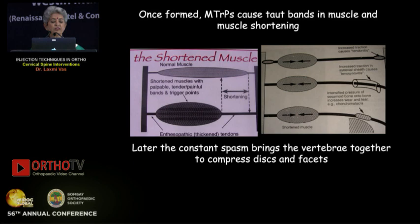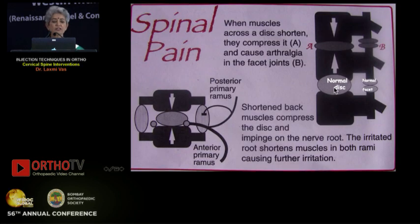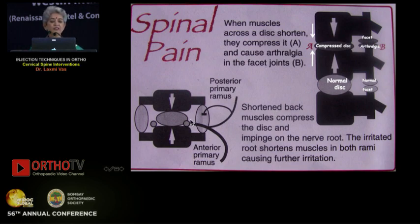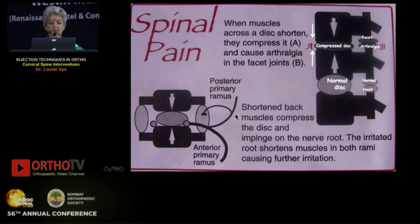The constant spasm brings the vertebrae together to compress the discs and facets. When muscles across the discs shorten, they compress the disc and cause facet arthralgia. In addition, it compresses the disc and impinges on the nerve root. This irritated nerve has an anterior root which causes the radicular pain, and the dorsal root — which has the median and lateral branch — will supply the neck muscles, back muscles, etc.